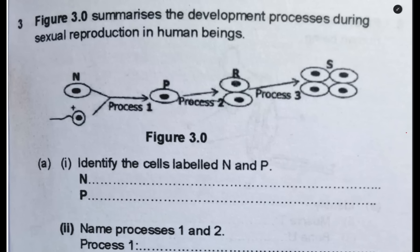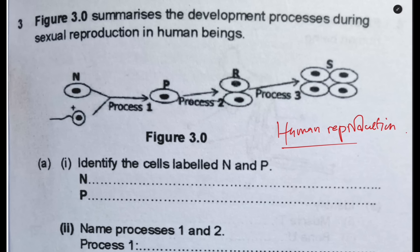Let us answer questions from human reproduction. We are going to answer some questions from human reproduction. This is one of the topics that you need to prepare for in an exam. It is a wide topic that covers many areas — one part is asexual reproduction in amoeba, then vegetative propagation, and all the different parts of the topic that you need to look at.